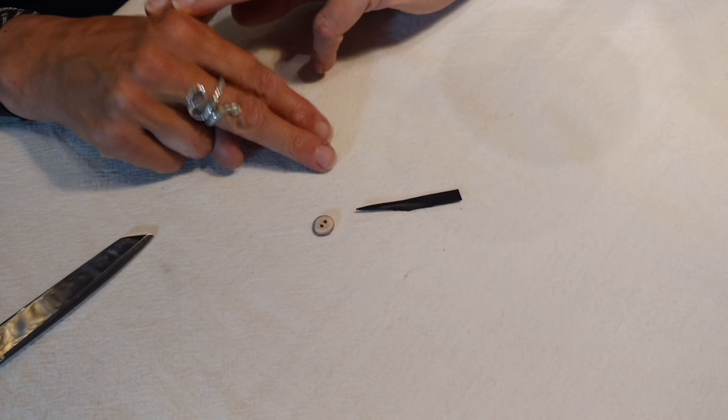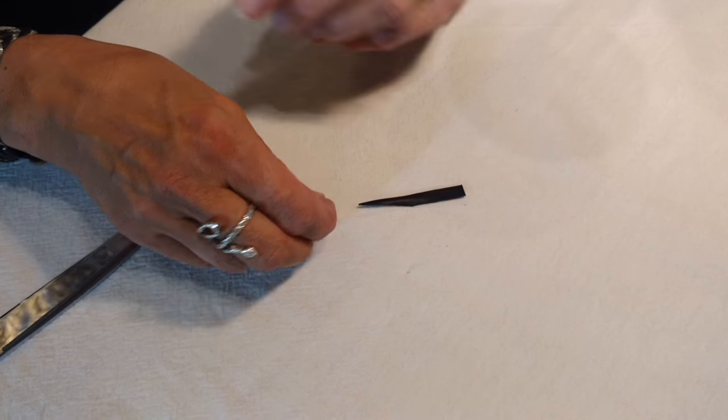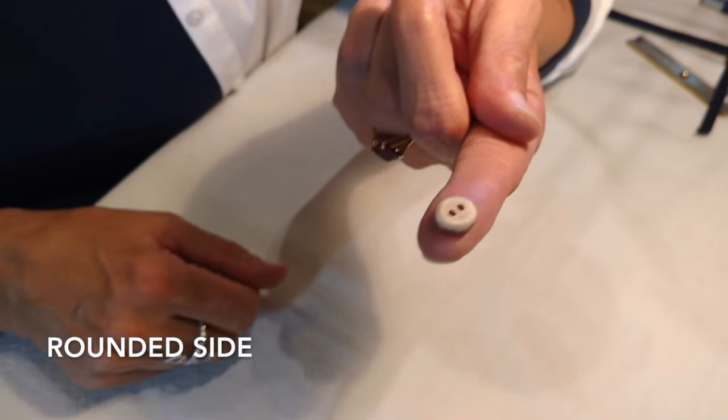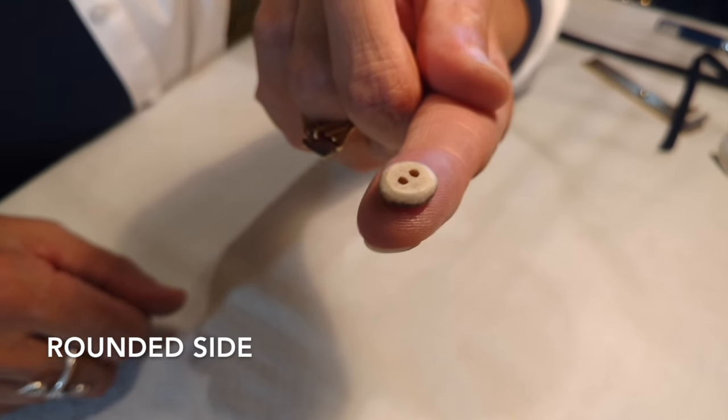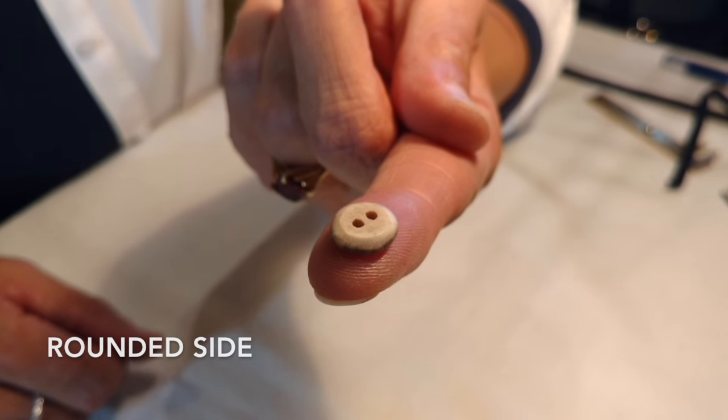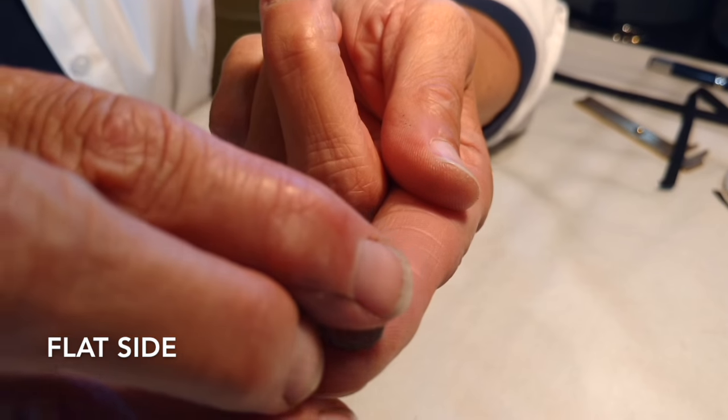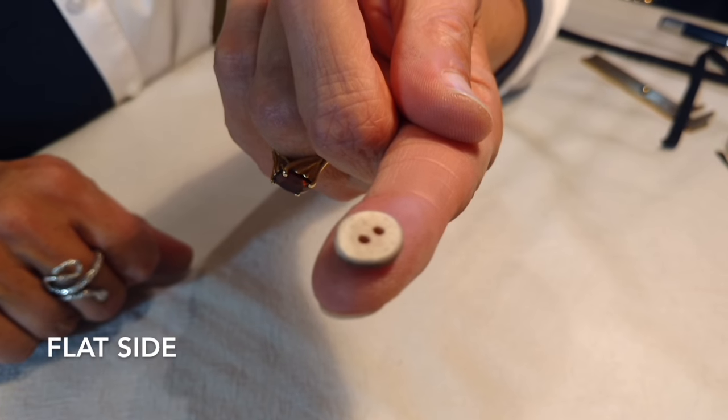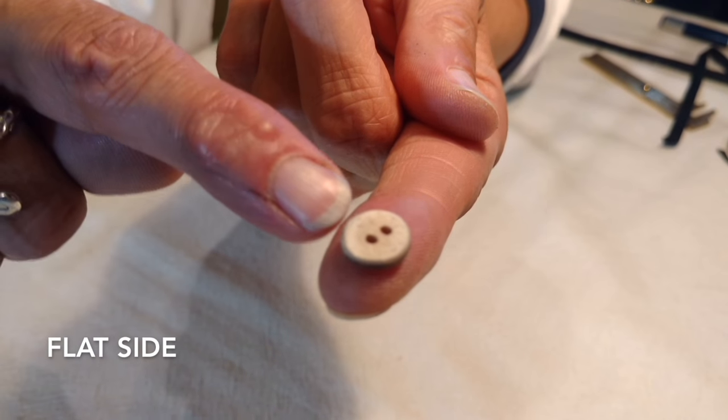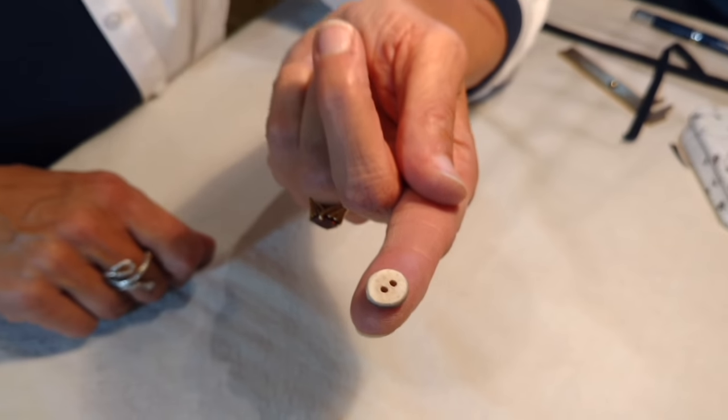Good quality reindeer antler buttons come with a couple of features. One side will be rounded and one side will be flat. It's the flat side that we will use to thread our reindeer strip.